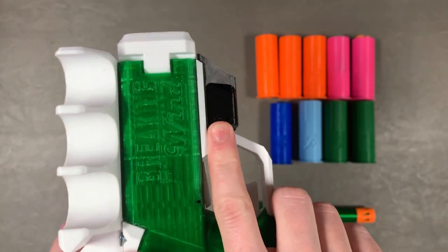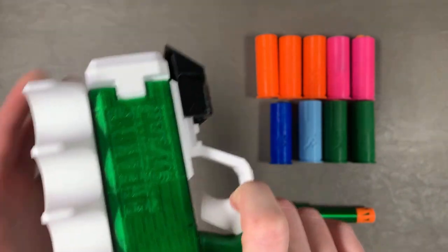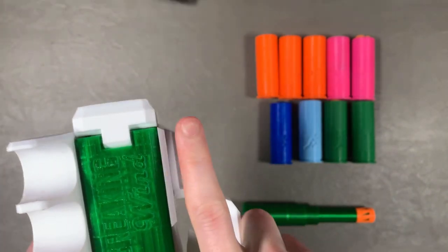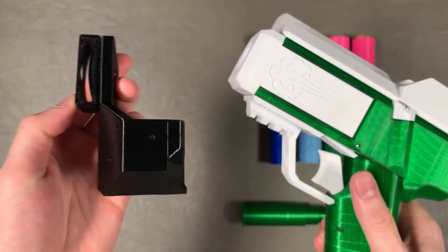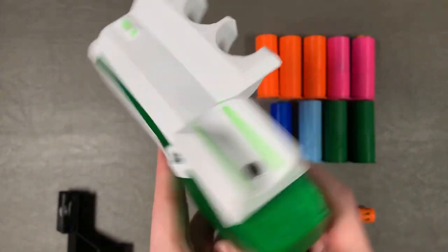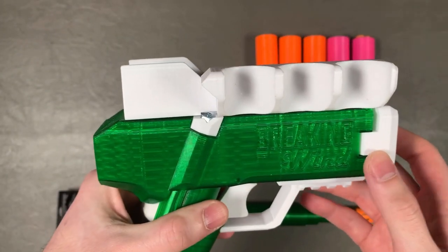It snaps really nicely into place on that bottom Picatinny. It's not going anywhere. Then you just use your pointer finger to disengage. Really nice. This is a pretty solid piece, very similar to their Second Wind design. Looking up top to the shell holder, you can see it holds four shells total.